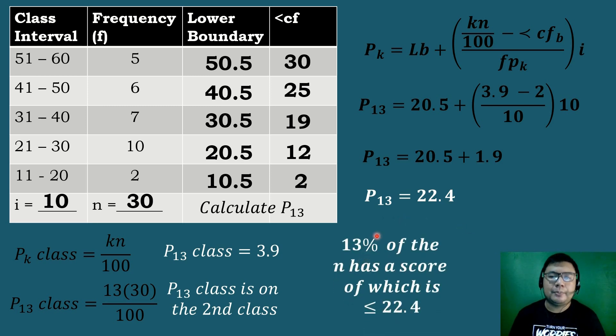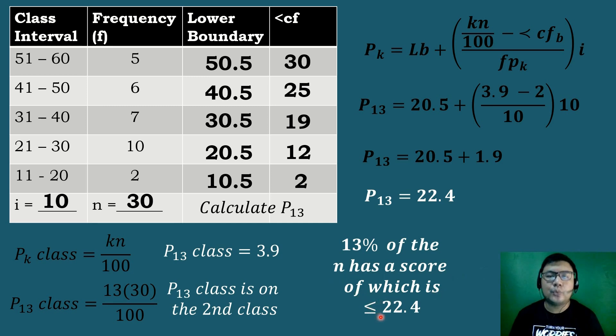If we interpret this: 13 percent of the total frequency has a score which is less than or equal to 22.4.